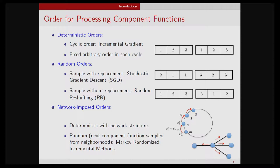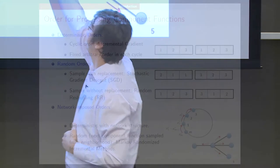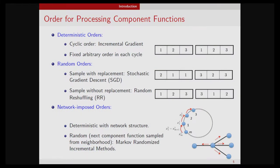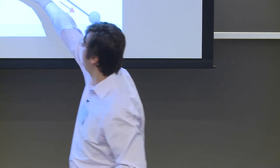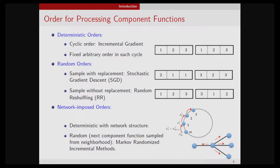Random reshuffling is something in between: it looks deterministic because you don't allow repetitions within a cycle, but it looks random because each cycle you use a random permutation of your data points. For problems with a network structure — like wireless or sensor networks with a static topology — you also have constrained orders when passing information.